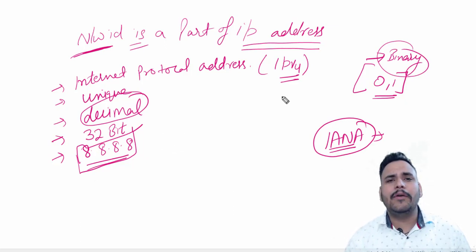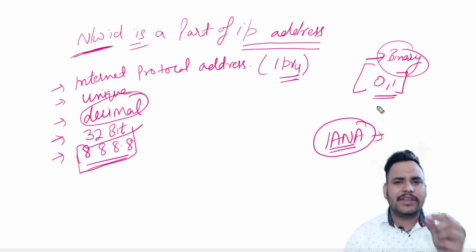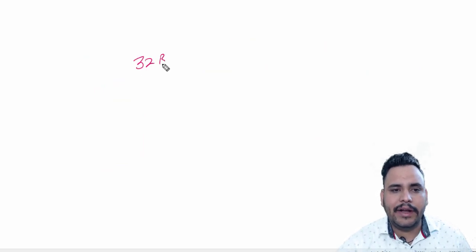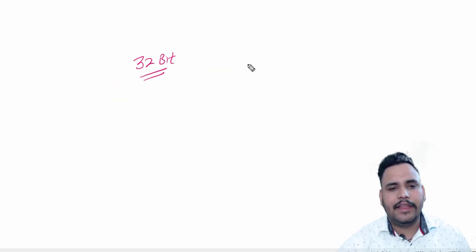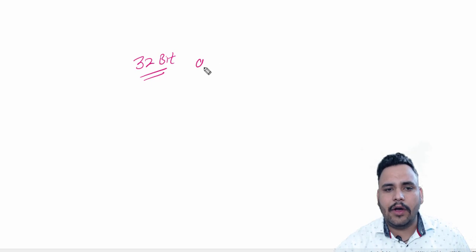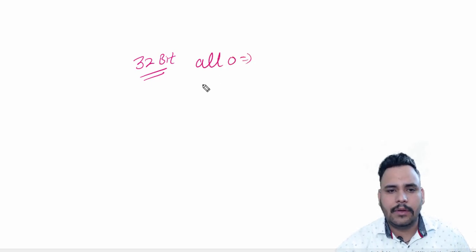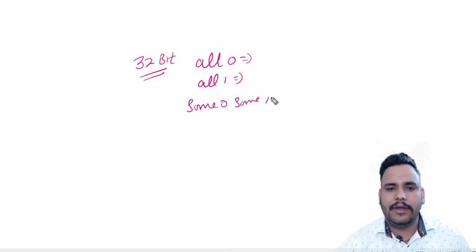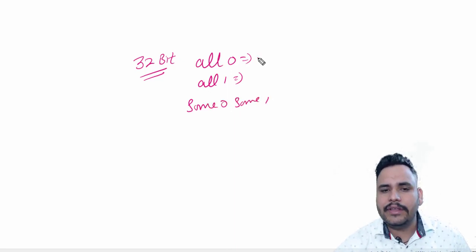So if we know about binary to decimal, let me start with one basic introduction. For example, we have a 32-bit IP address divided into 4 octets of 8 bits each. All bits can be 0, all bits can be 1, or some bits can be 0 and some can be 1.